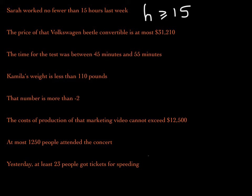The price of that Volkswagen Beetle convertible is at most $31,210. The price is at most — so the greatest value is $31,210. The Beetle is either $31,210 or something less than that. So if we choose the letter P for price, the price is at most $31,210 — it can equal that value but cannot be more than that. So P is less than or equal to $31,210.